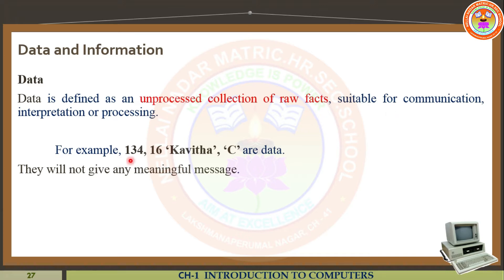For example, here I gave some examples: 134, which is a numerical value; 16; one girl's name; and the alphabet C. These all are considered as data — this is an unprocessed collection of raw facts. Is this meaningful? No. 134, 16, C, and a name — this is not a meaningful one. So this is called data. Whatever data you give to the computer, it should be considered as an unprocessed collection of raw facts — it does not give any information.